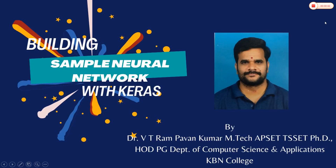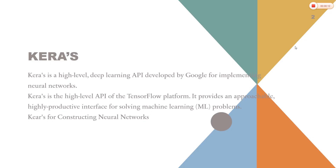Good morning one and all. In this session we are going to learn how to build a sample neural network with the Keras package. Generally for constructing a neural network, we require Keras as well as TensorFlow packages. Keras is a high-level deep learning API developed by Google for implementing neural networks. It is the high-level API of the TensorFlow platform, providing an approachable and highly productive interface for solving machine learning as well as deep learning algorithms. Using Keras, we can develop any type of neural network from input layer to output layer and hidden layers.